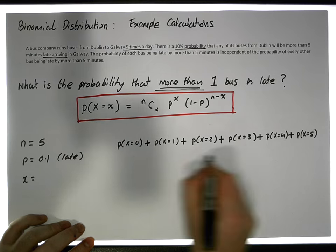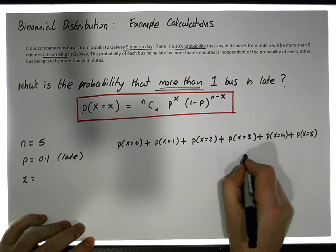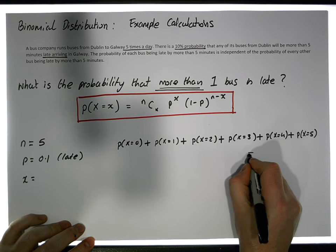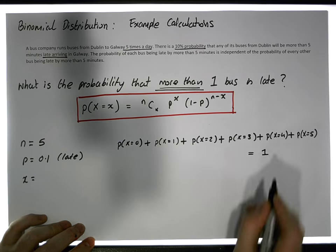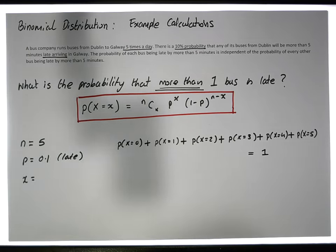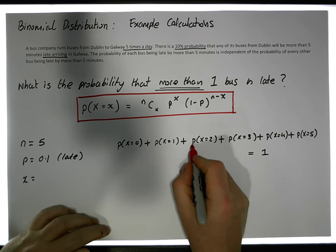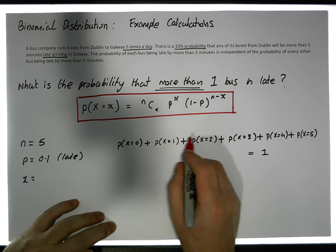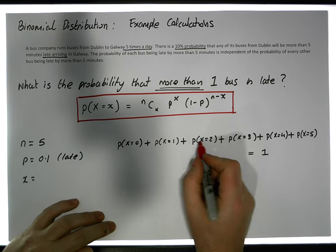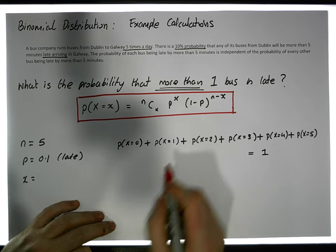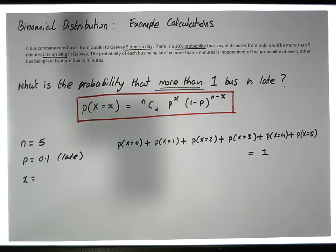Let's keep in mind that the total sum of all the probabilities must equal one. We're interested in calculating more than one bus late — let me get a blue marker to continue.